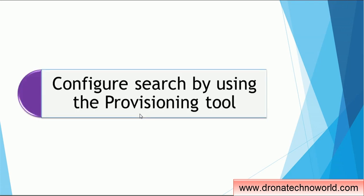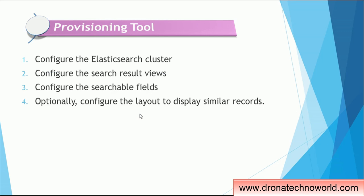We are now done with setting up Elasticsearch, the hub server, and the process server. The next thing is the provisioning tool. Elasticsearch is more commonly used in Entity 360, which requires the provisioning tool. In the provisioning tool, the various sections we need to configure for Elasticsearch include: configure the Elasticsearch cluster, configure the search result view, configure the searchable fields, and optionally configure the layout to display similar records.